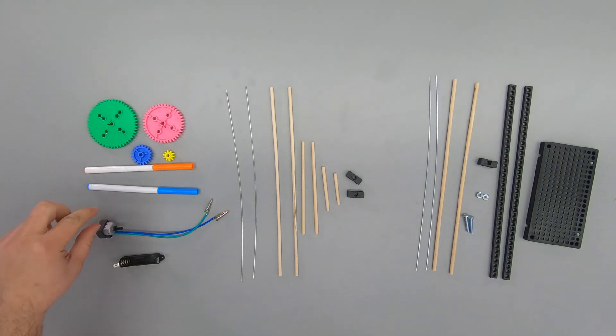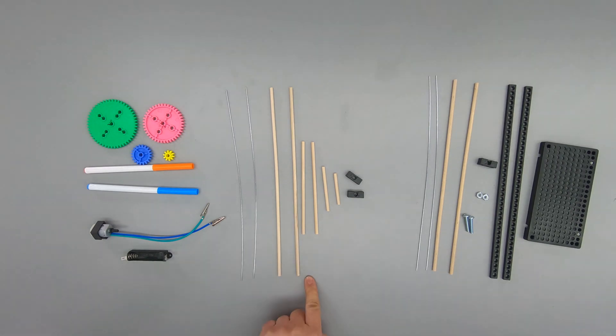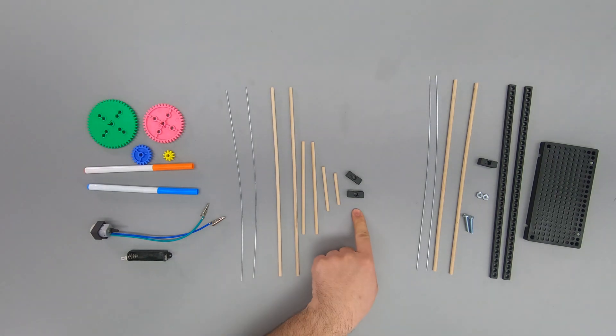A set of four gears, two markers, a motor with leads, a battery holder, two pieces of steel building wire, eight dowels of assorted lengths, and two perpendicular blocks.